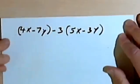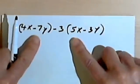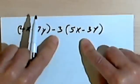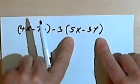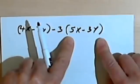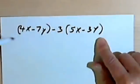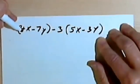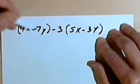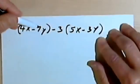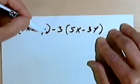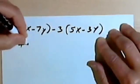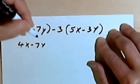Let's look at this one. Here I have two sets of parentheses: (4x minus 7y) minus 3 times (5x minus 3y). Starting from the one on the left — I can't really do anything with 4x minus 7y; I can't combine them because I have x's and y's. So I don't need these parentheses anymore, and that's going to be the same as 4x minus 7y.